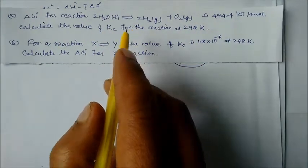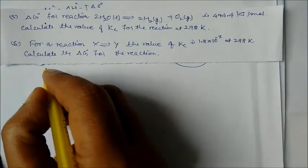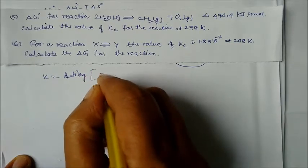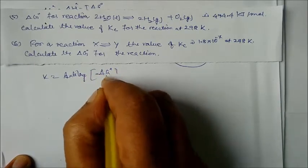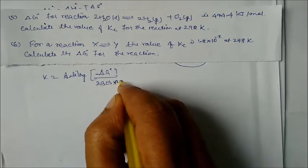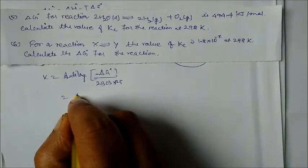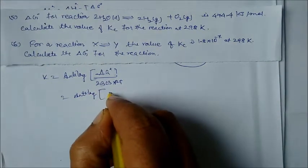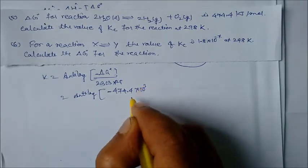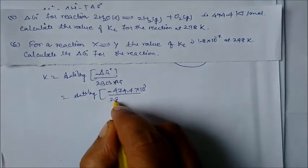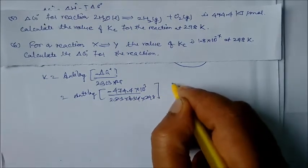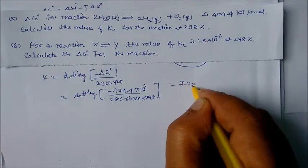Using log Kc = −ΔG° / (2.303 RT), we put in: −474.4 × 10³ / (2.303 × 8.314 × 298), and solving gives Kc = 7.2 × 10⁻⁸⁴.